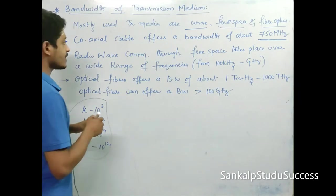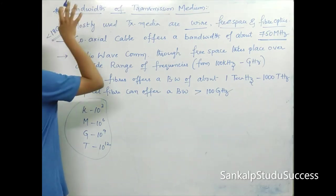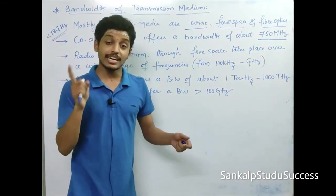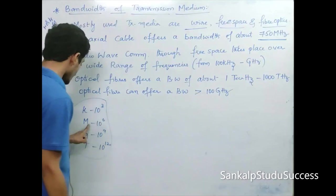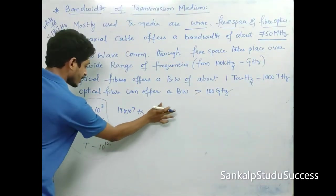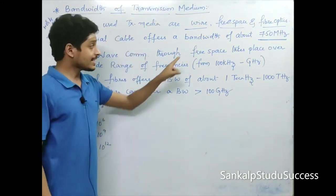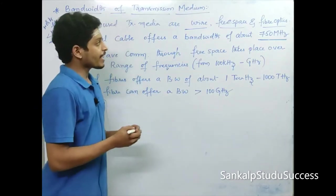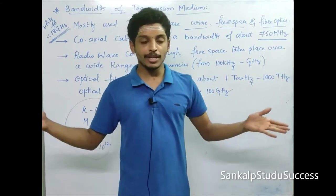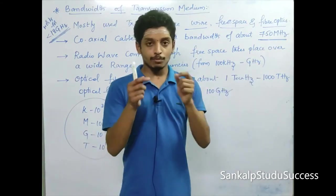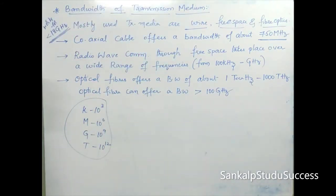The disadvantage of coaxial cable is that it works for frequencies less than 18 GHz — that is 18 × 10⁹ Hz. If you need to use frequencies above 18 GHz, coaxial cable cannot transmit. In that case, we need to use fiber optics or free space. Fiber optics is limited to a certain distance, so for intercountry communication we use free space via satellites.